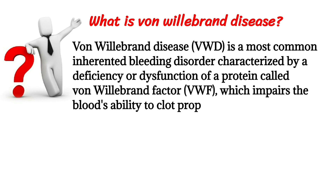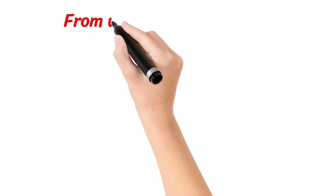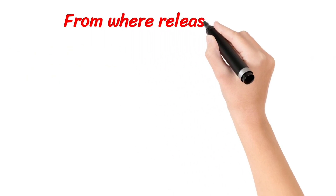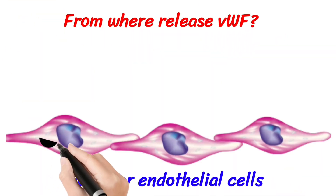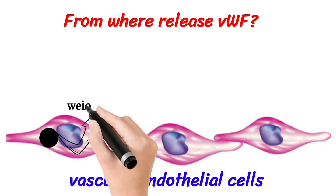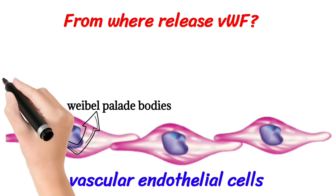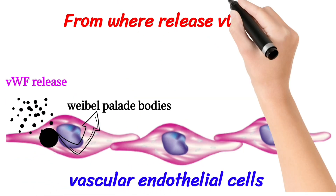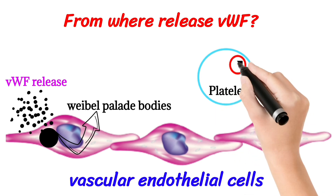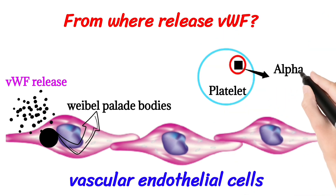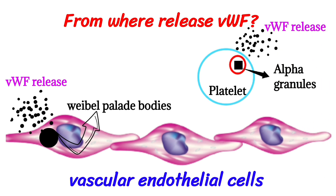Von Willebrand factor is released from vascular endothelial cells — specifically from Weibel-Palade bodies — and from platelets, in which alpha granules release von Willebrand factor.